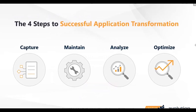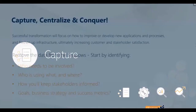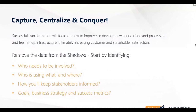We've outlined four steps to a successful application transformation: capture, maintain, analyse, and optimise. Capture is effectively where we have to start looking at how we bring content into a centralised system. A lot of the time, trying to collect all the information can be a bit of a headache. You want to get the whole organisation involved — walk the floor, see what's going on, understand what systems people are using, who the owners of those systems are, what they're using those systems for, and then start building up a portfolio.